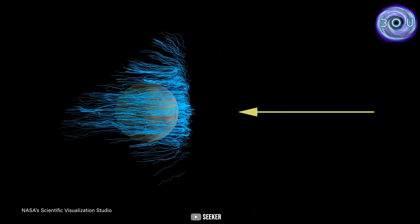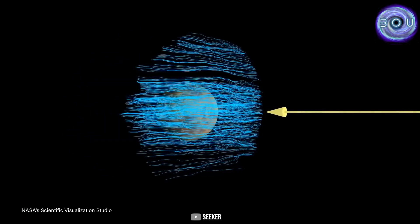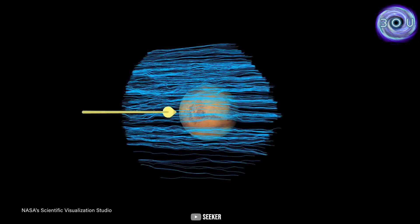The planet Mars also once had a strong magnetic field like Earth's, but due to unknown reasons, its magnetic field disappeared, leading to its current state.